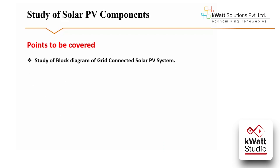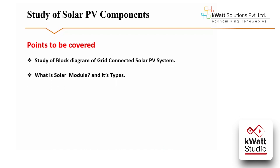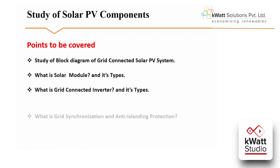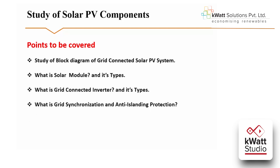Here we will learn the block diagram of grid connected solar PV system and see how it works. We will see what is a solar module and its types, and what is a grid connected inverter and its various types. We will also see what is grid synchronization and anti-islanding protection in grid connected solar PV system, and why you should take care of anti-islanding protection.